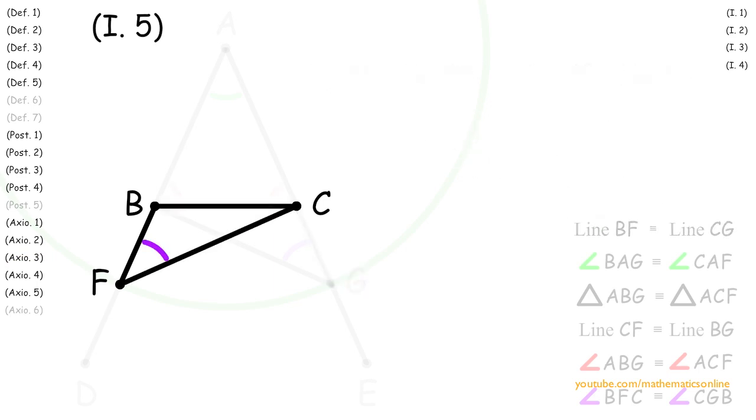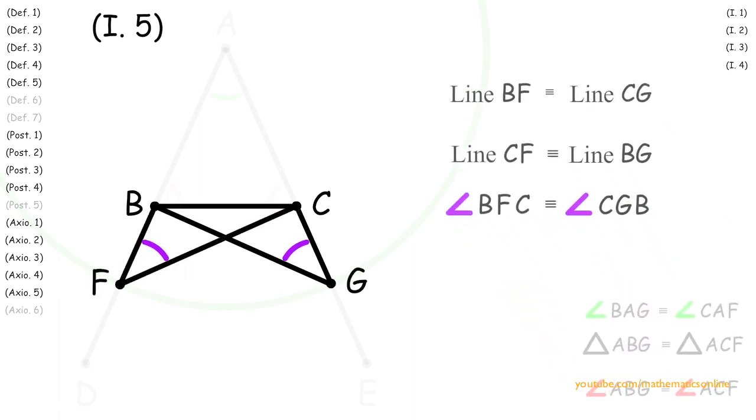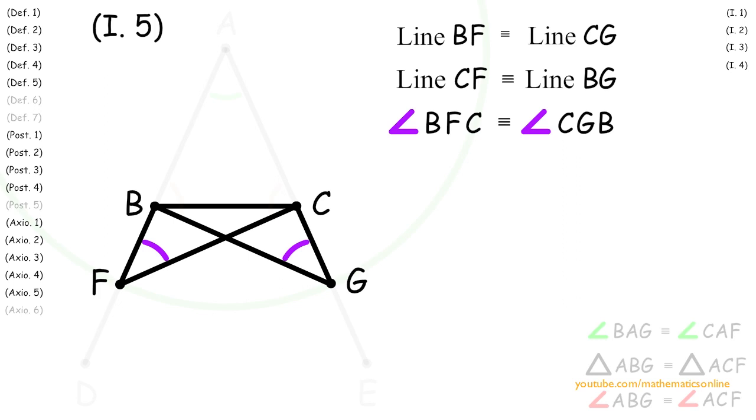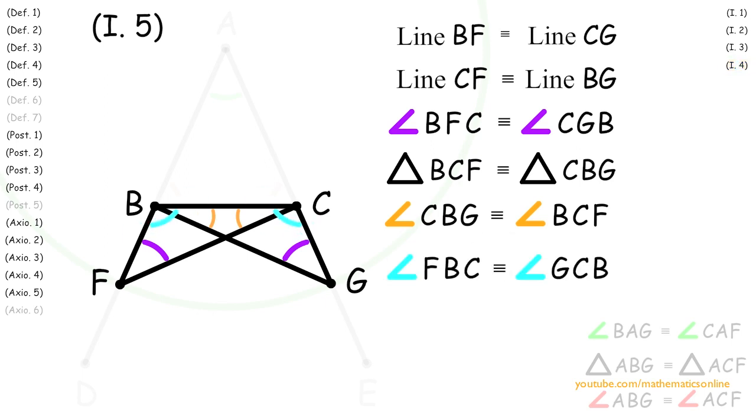So looking at triangle BCF and triangle CBG, we can see that they both share a corresponding side angle and side. Therefore, by Proposition 4, triangle BCF is congruent to triangle CBG, angle CBG is congruent to angle BCF, and angle FBC is congruent to angle GCB.